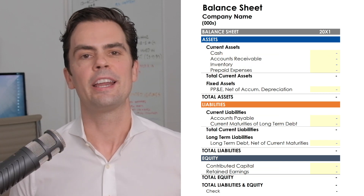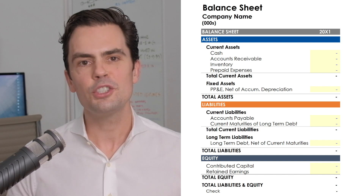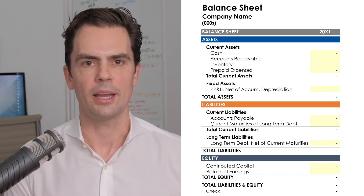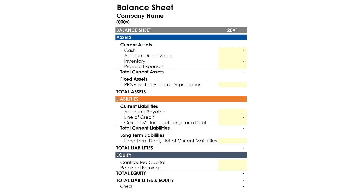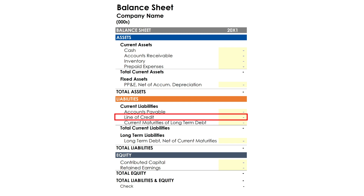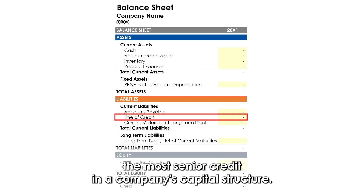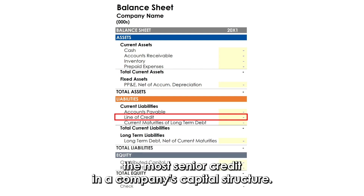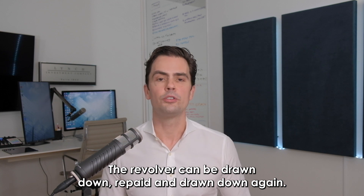With these updates, we can look at our updated balance sheet. This new view combines our visual balance sheet with the new accounts we just described. The only additional line item is the line of credit, also known as a revolving credit facility. The line of credit is a commonly used form of debt that typically represents the most senior credit in a company's capital structure. The revolver can be drawn down, repaid, and drawn down again should the company require it.